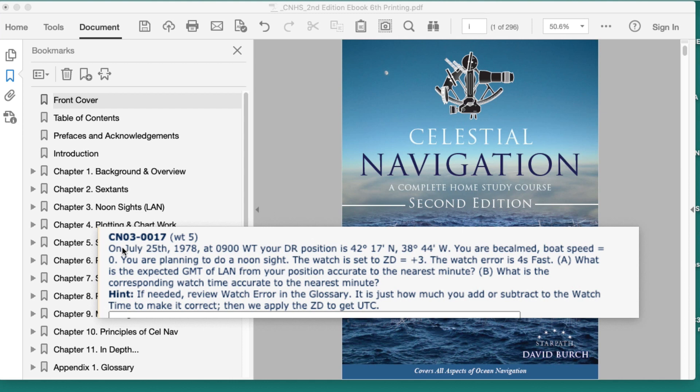Here's the exercise, this is actually a quiz question, quiz 3 number 17. It's July 25th, 1978, 9 o'clock watch time, DR position 38°44' west. You'll be calmed, boat speed 0, you're planning to do a noon sight. The watch is set to zone description plus 3, and the watch error is 4 seconds fast.